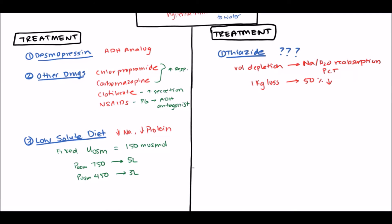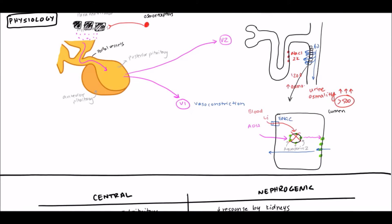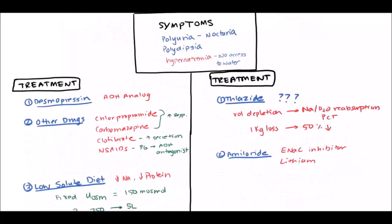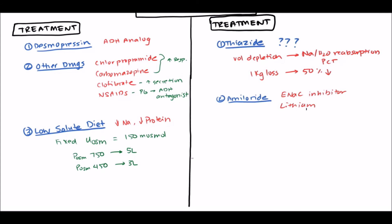Another treatment to consider is amiloride, a sodium channel inhibitor (ENaC inhibitor), primarily used for patients on lithium. Since lithium uses the ENaC channel to enter the principal cell and inhibit aquaporin-2, blocking that channel with amiloride prevents lithium from entering. This allows patients on lithium to continue using it to treat, for example, bipolar disorder. The low-solute diet is also recommended for nephrogenic patients, just as with central DI.